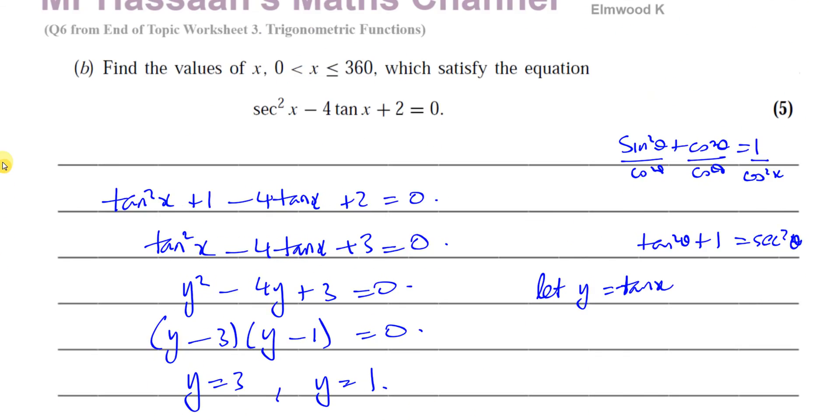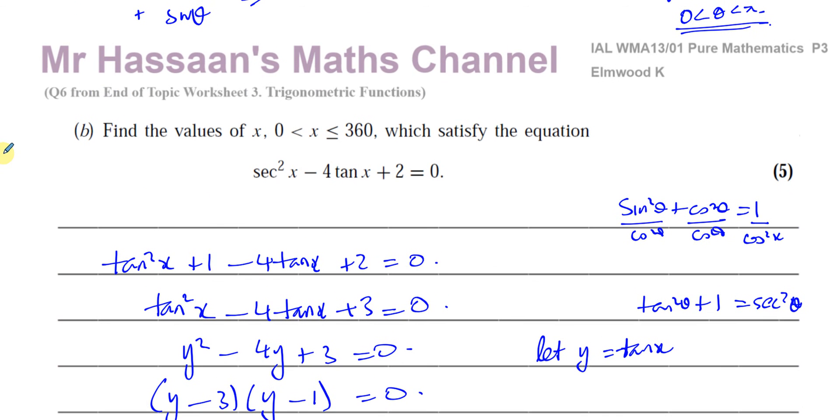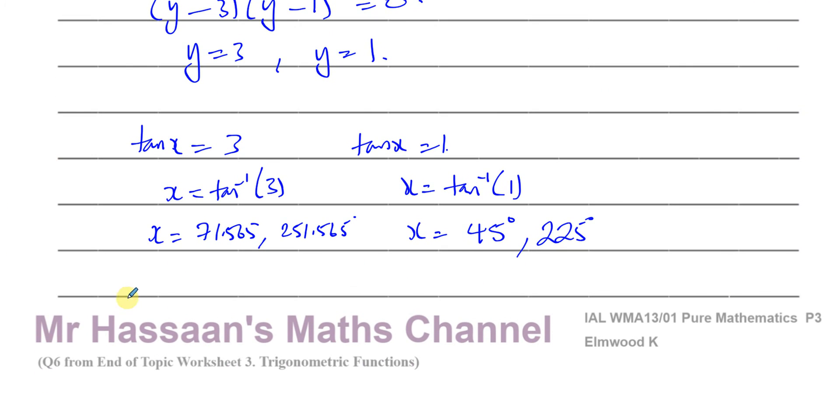Now, did they tell us how they wanted to round it? They didn't tell us how to round it. So therefore, we should give angles to one decimal place. So it's 71.6 and 251.6 degrees. And so here we have the solutions. There's two from this part, and there's two from that part.